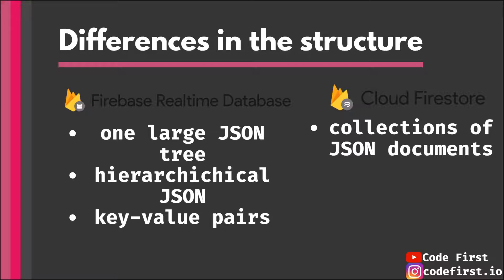Cloud Firestore, meanwhile, stores data as collections of JSON documents. Each document represents a certain data point, and you have collections housing multiple documents. The Realtime Database is one large JSON tree — one large root node with hierarchical child nodes. Both databases are hierarchical, but they differ in architecture: Firestore uses collections and documents, while the Realtime Database uses a single nested JSON tree.